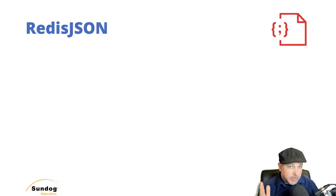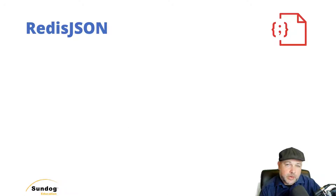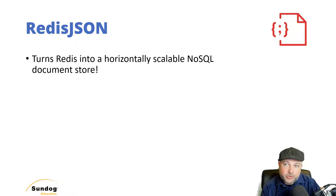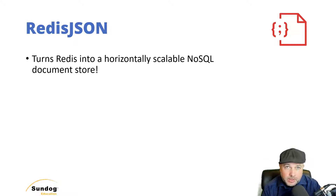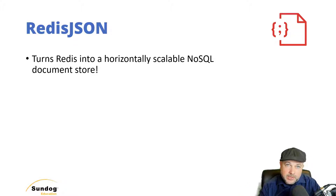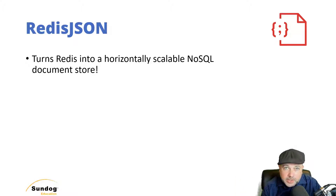Let's talk about what I think is one of the most exciting parts of the Redis modules: Redis JSON. This basically turns Redis into a full-featured, horizontally scalable, NoSQL document store. That's a big deal — instead of using some external third-party system with its own complexity and having to understand how it works and is configured, you can do all this within Redis now.